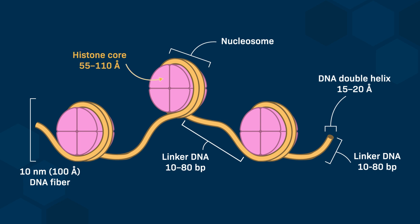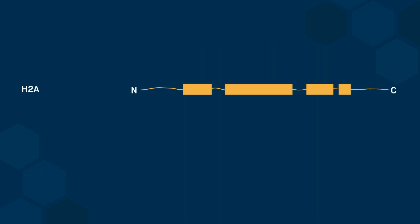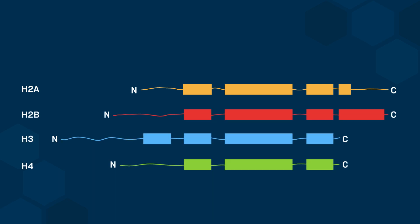The histone core in a nucleosome is composed of four types of proteins. These histones are labeled as H2A, H2B, H3, and H4. They all possess a conserved central region known as the histone fold domain. However, they differ in their N and C terminal regions, which are referred to as N terminal tails and C terminal tails.